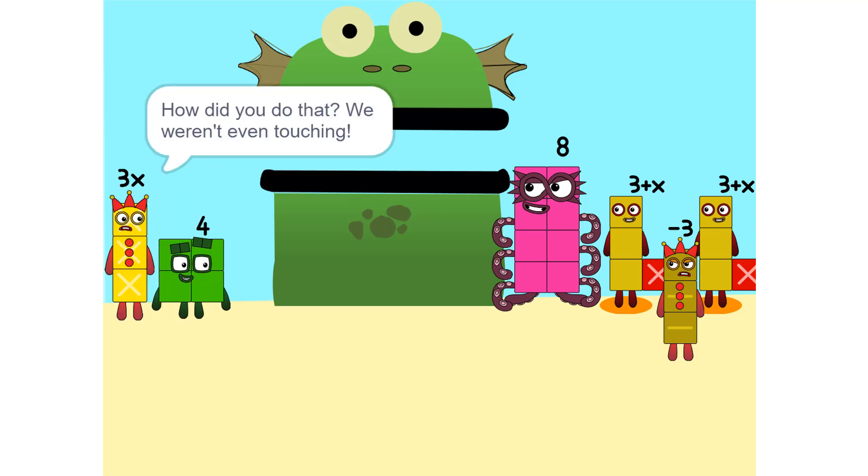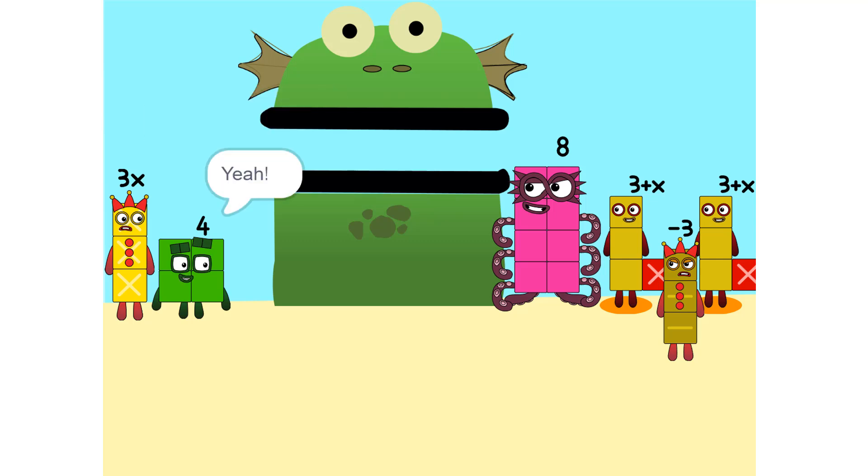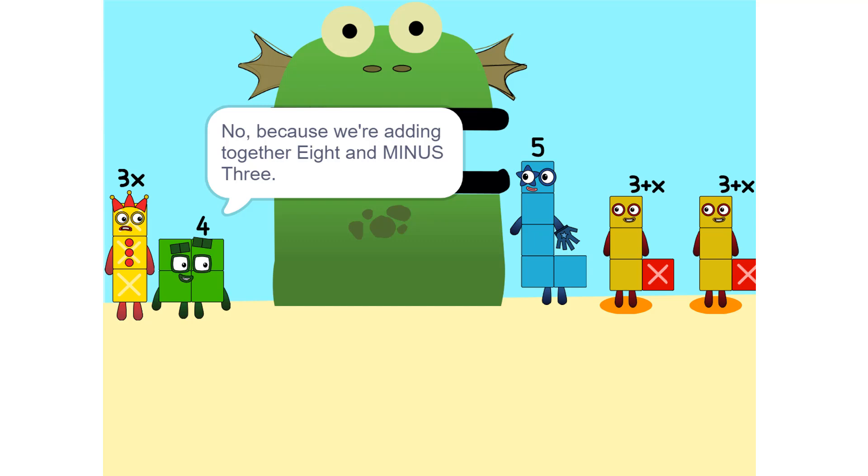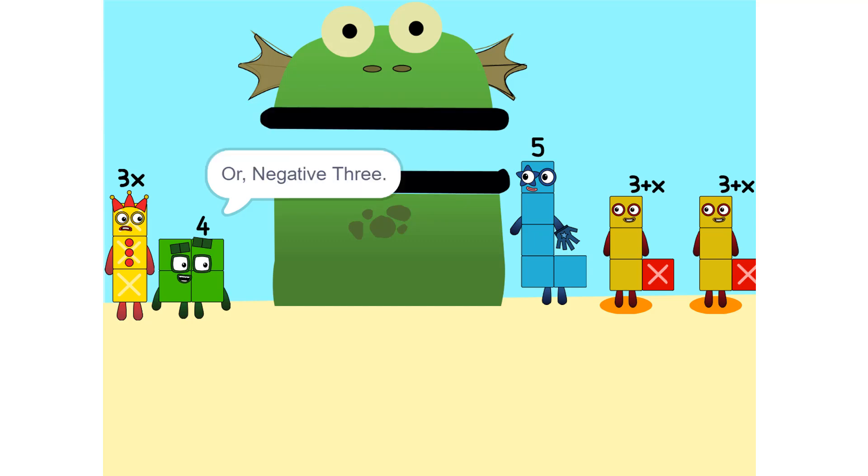How did you do that? We weren't even touching. They don't have to be. We can also add these together. 5. Wouldn't it be 11 since 8 plus 3 is 11? No, because we're adding together 8 and minus 3, or negative 3. So it's 5.